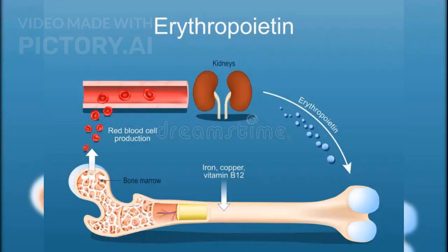RBCs are produced in the bone marrow through a process called erythropoiesis. Their lifespan is approximately 120 days, after which they are broken down in the liver and spleen.